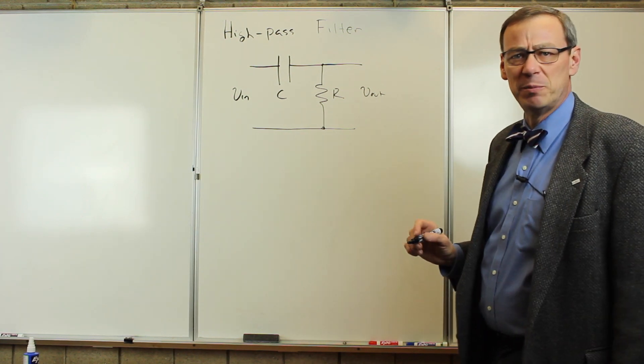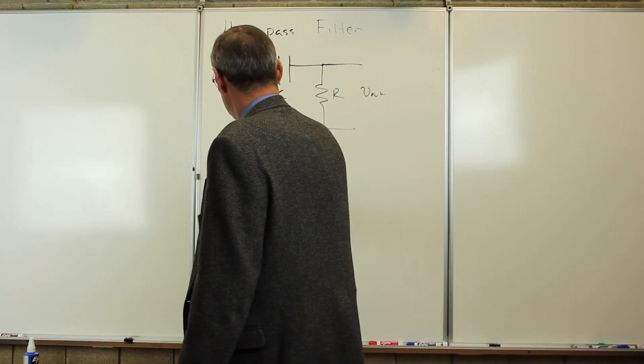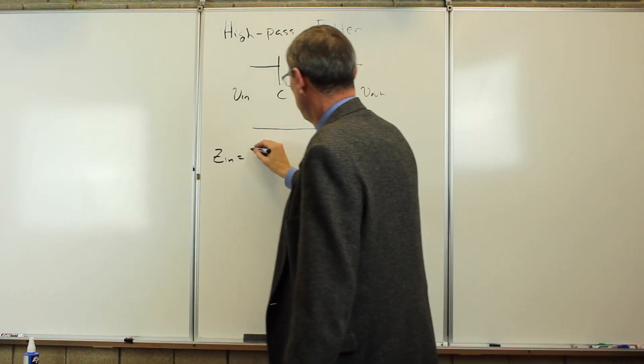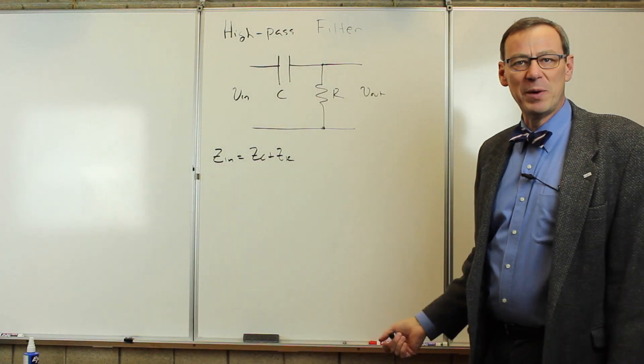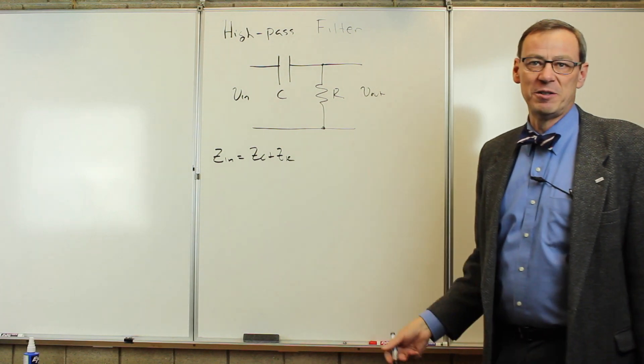Let's start with the input and output impedance. The input impedance is just the series, Zc plus Zr. That's going to be exactly the same as we got in the low-pass filter. It's the capacitor and resistor in series.